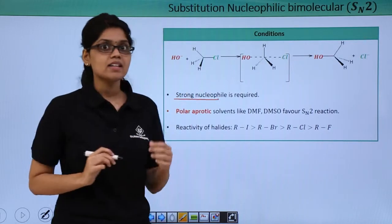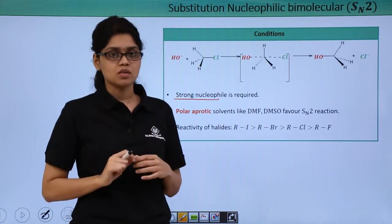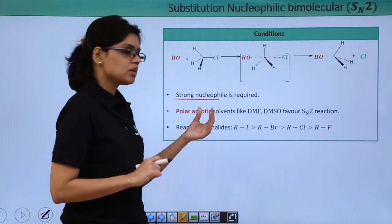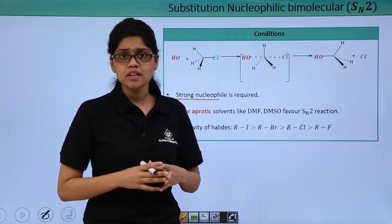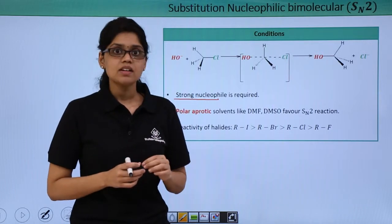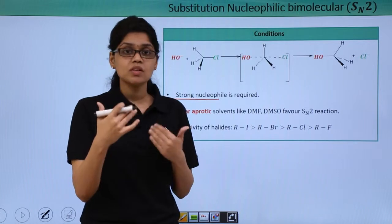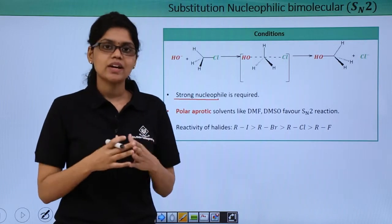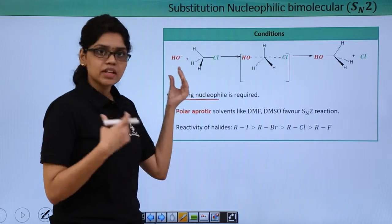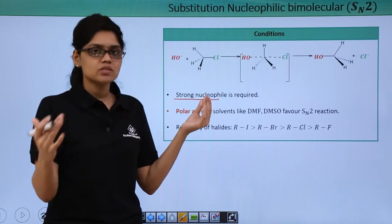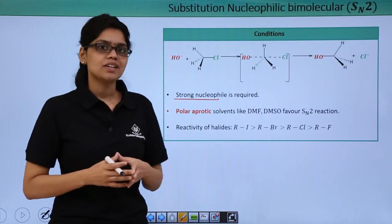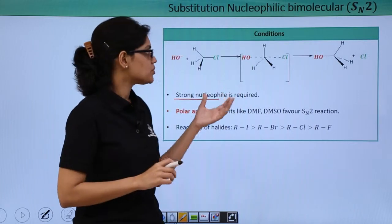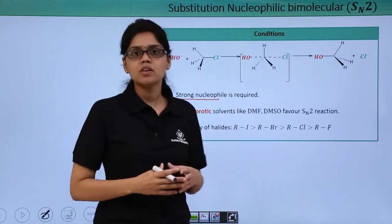It is also important to note that SN2 reaction is favoured in the presence of a polar aprotic solvent, in contrast to SN1 reaction where a polar protic solvent was preferred. Why do we prefer polar aprotic solvents like DMF or DMSO in SN2 reactions? It is mainly because if we use a polar protic solvent, our strong charged nucleophile will get deactivated via hydrogen bonding with the protic solvent, decreasing its nucleophilicity. Without a strong nucleophile to attack the RX, the reaction does not take place. Polar aprotic solvent is therefore required, and it also helps stabilise the leaving group via solvation effects.